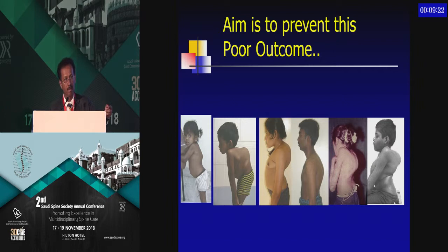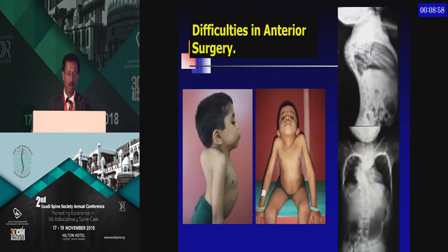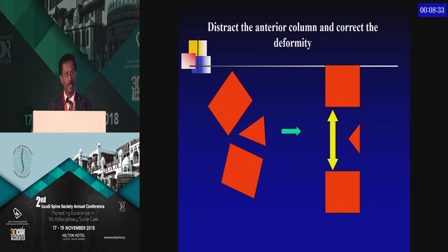What are the surgical principles that have evolved for correcting these massive deformities? We were always taught that the best way to treat spinal tuberculosis is through an anterior approach, because the dictum was that it is an anterior pathology and so must be approached anteriorly. But this was actually the cause of a lot of mortality and morbidity. If a child is already in respiratory distress with cardiorespiratory embarrassment, performing a massive anterior thoracotomy carries a high risk of mortality or many days in the ICU.